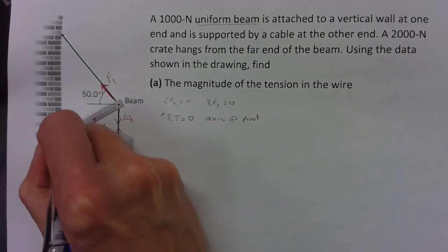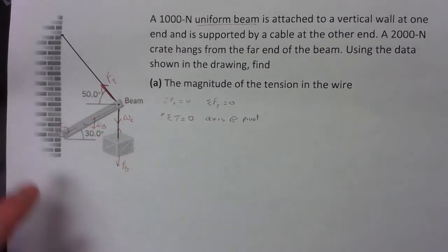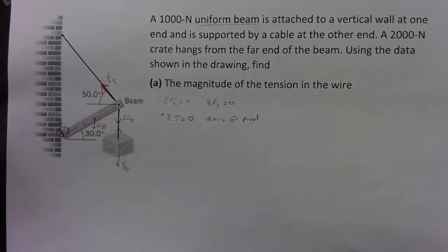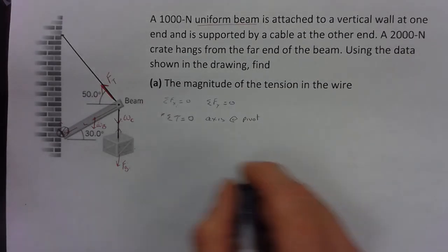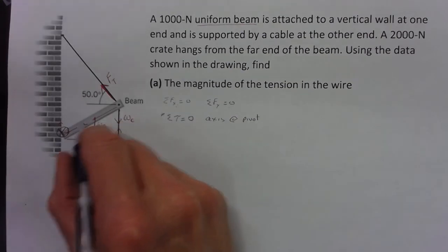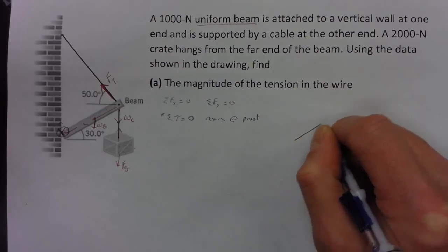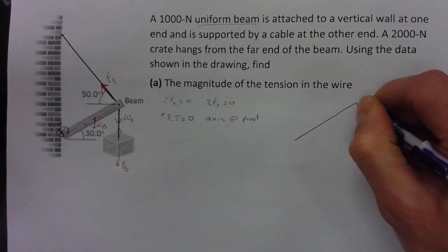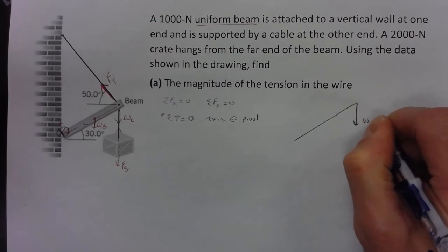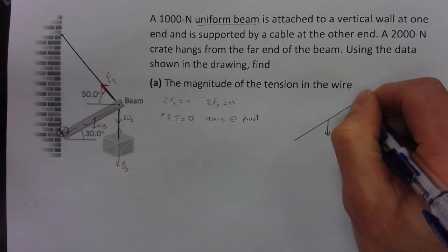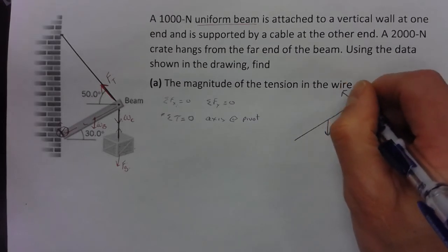That is beneficial because it eliminates any torque due to the forces there at the pivot, which are things I don't know. So I'm eliminating unknowns and things I don't want to know right now. Well, let's again make a better diagram, so I'll do that over here. We've got our beam, we've got the weight of the crate, we've got the weight of the beam, we've got our tension.